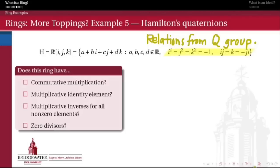What Hamilton's quaternions do is take that multiplication and turn it into a ring by making formal sums of i's, j's, k's, and constants, where the coefficients are real numbers. So Hamilton's quaternions look an awful lot like complex numbers, except in addition to the imaginary unit i, we also have imaginary units j and k. Each of them individually squares to negative 1, and the multiplication i times j equals k, j times i equals minus k is anti-commutative. Souped up with real coefficients, we get a ring called Hamilton's quaternions.